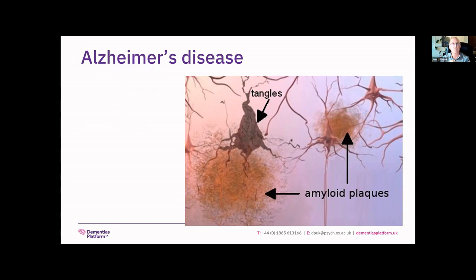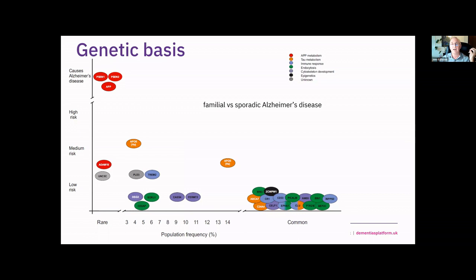I'm going to use Alzheimer's disease as an exemplar to illustrate the complexity of the problem. Here we have an image of the pathology associated with Alzheimer's disease — the characteristic pathology: extracellular amyloid plaques and intracellular tau tangles. You can observe these pathologically post-mortem, and you can detect them with PET imaging. These are the key signs that Alzheimer's disease shows.